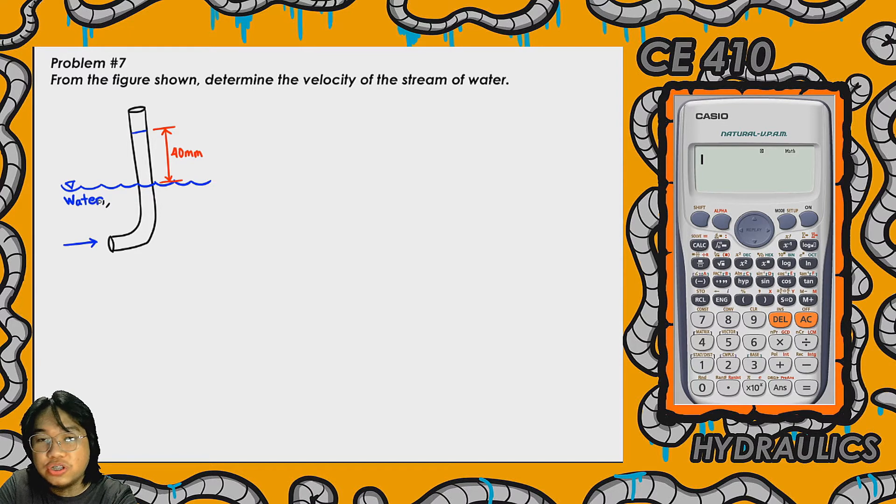Since water is flowing, there is velocity in this stream, and that's what we need to determine. How do we determine this? We have a device which is the bent tube.